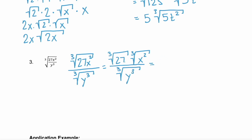Now we can take the cube root of 27, which is 3. We can't find the cube root of x squared, so that just remains. And the cube root of y cubed is just y. That wasn't too bad.